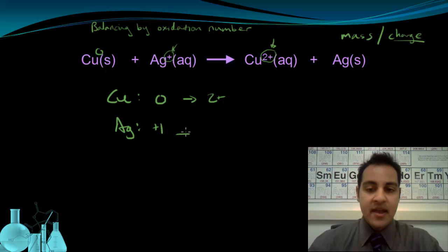And ends up as a zero. The solid silver on the product side is a pure element, so it has an oxidation number of zero. So what do these changes in oxidation numbers tell us?